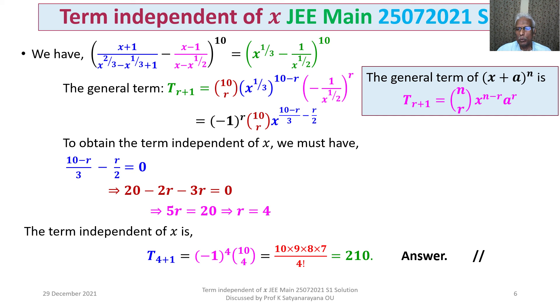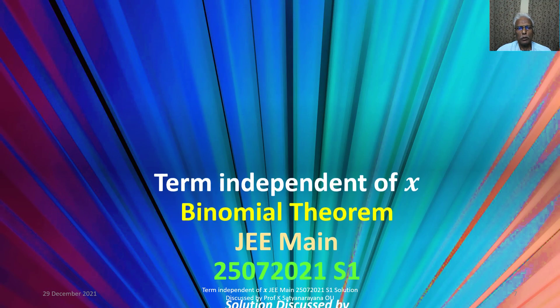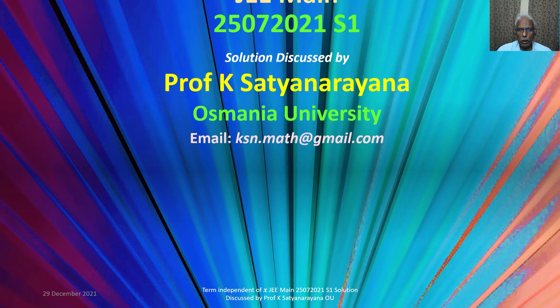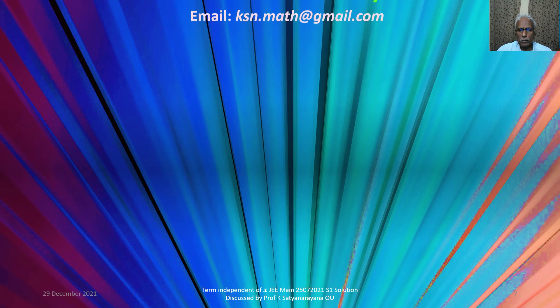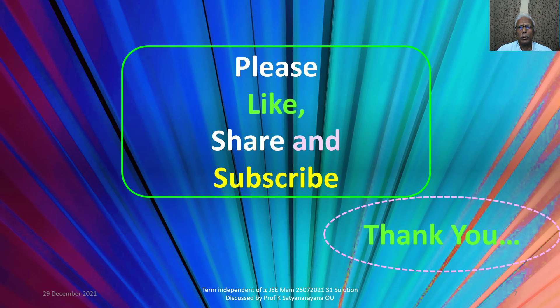So the term independent of x in the given expansion is 210. That is the discussion of the solution of the problem from the section Binomial Theorem based on the concept of term independent of x. I hope you have understood the solution. I wish you all the best. Thank you.